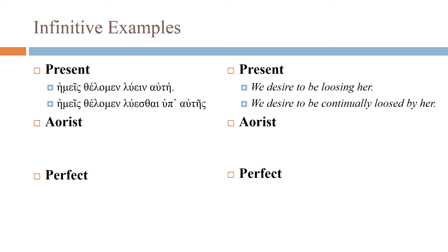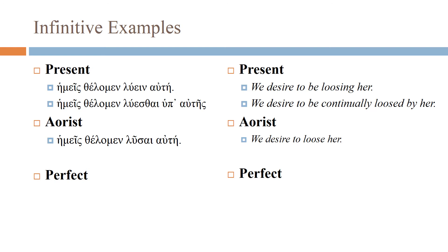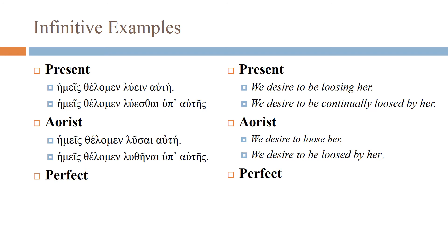The aorist infinitive: hēmeis thelomen lusai autēn. The -sai shows us it's aorist — we see that sigma tense formative. The meaning is 'we desire to loose her.' Rather than the continuous 'to be loosing her,' this is aorist and undefined, so we translate it as 'we desire to loose her.' Aorist passive: hēmeis thelomen luthēnai hupo autēs — the -thēnai ending is the aorist passive ending, and the meaning is 'we desire to be loosed by her,' with undefined aspect.